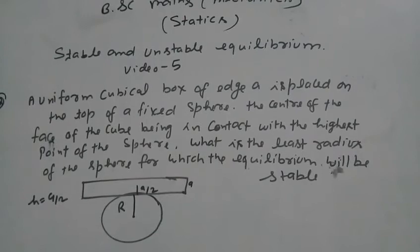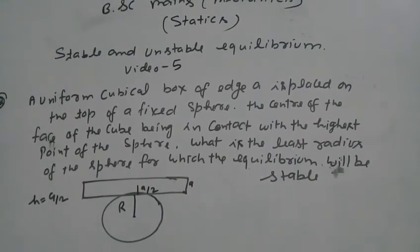A uniform cubical box of edge a is placed on top of a fixed sphere. The center of the top face of the cube is in contact with the highest point of the sphere.